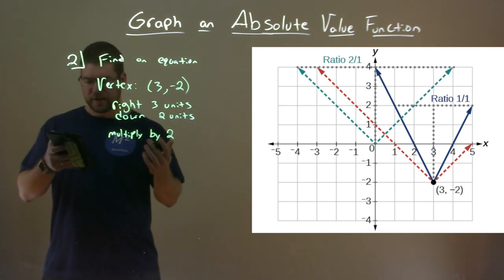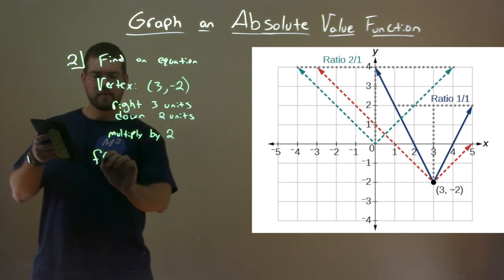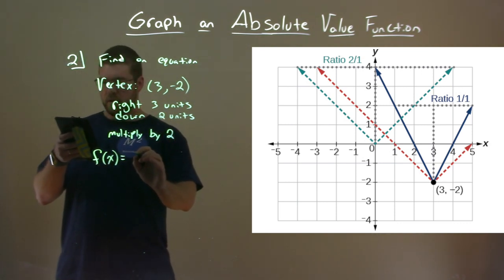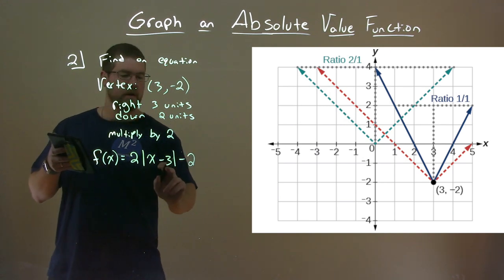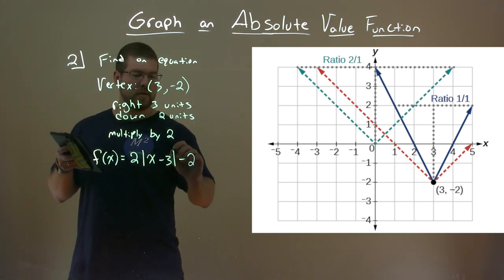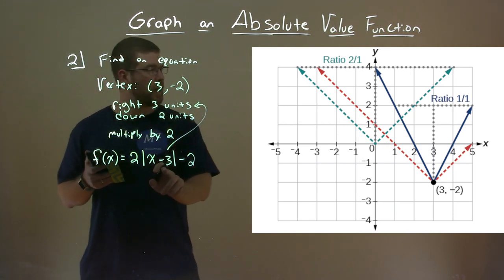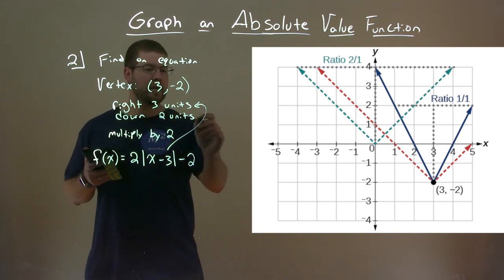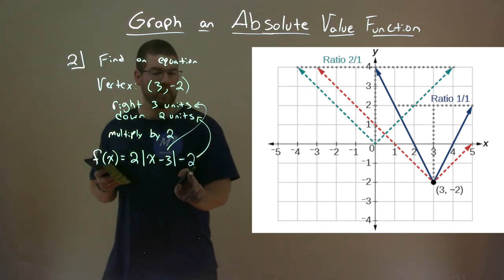So what does this look like? We have f(x), our new graph. We're going to see the parts here. We have 2 times the absolute value of x minus 3 minus 2. This minus 3 is that part right there. Remember, we're going right three units, so we're on the inside, and it's x minus that h value, which was positive three. We're going down two units.